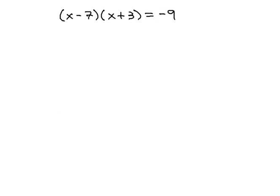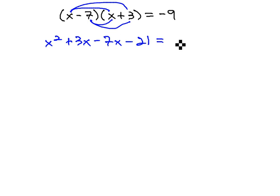This problem we see is already factored. However, the problem is it does not equal zero. Because it does not equal zero, this factored form is really of no use to us. So let's multiply it out. x squared plus 3x minus 7x minus 21 equals negative 9. Combining like terms gives us x squared minus 4x minus 21 equals negative 9.